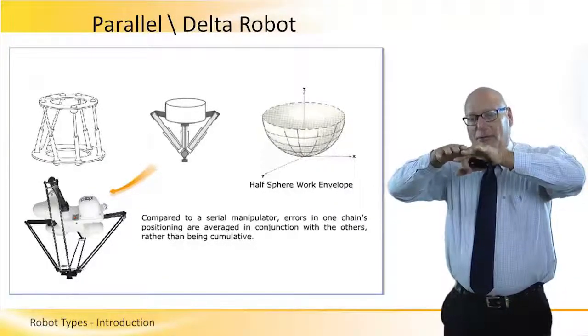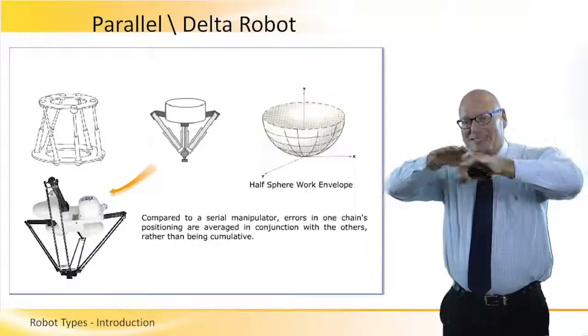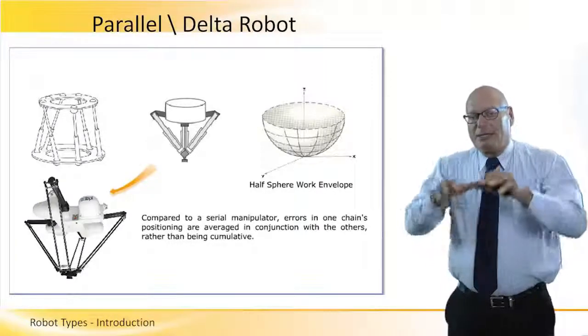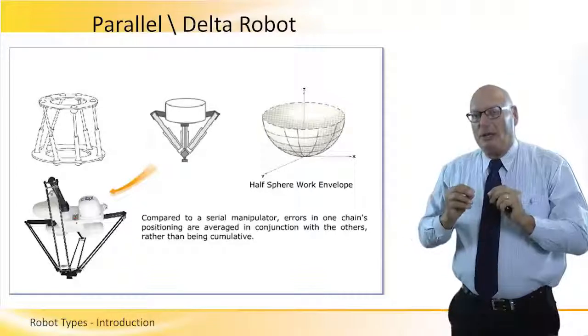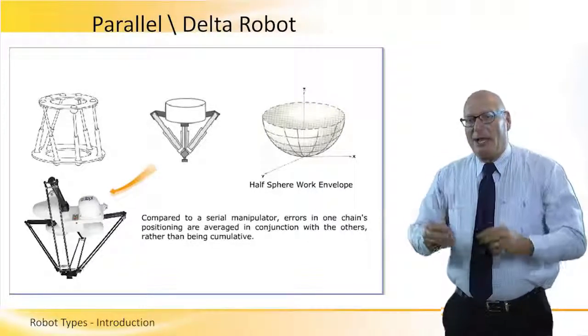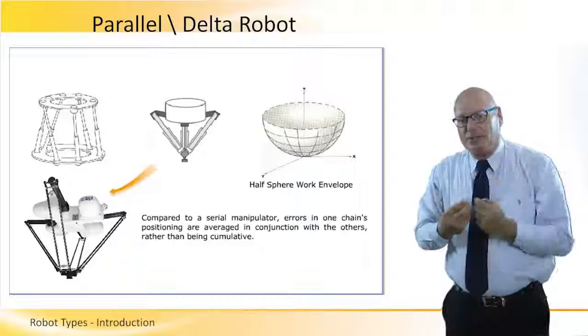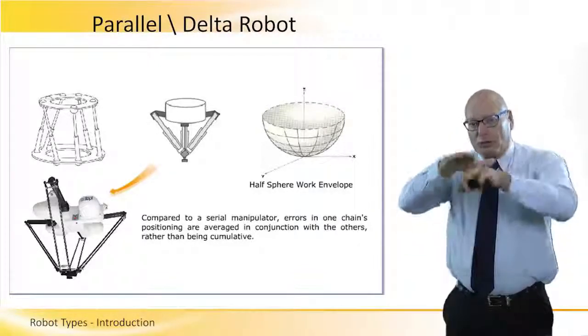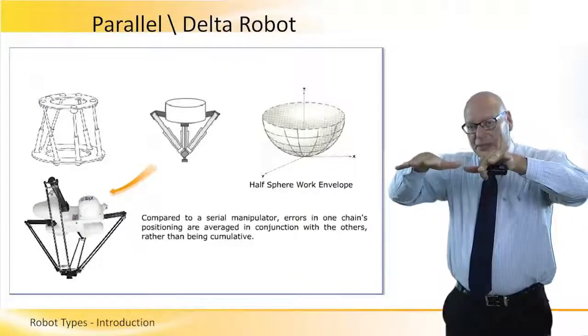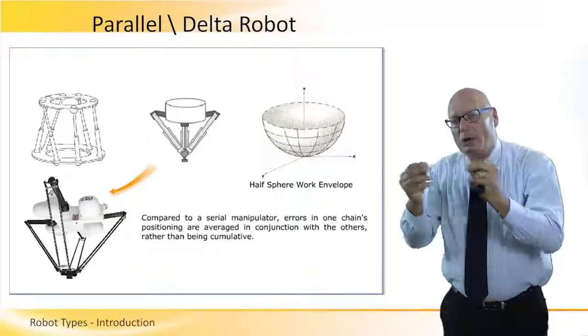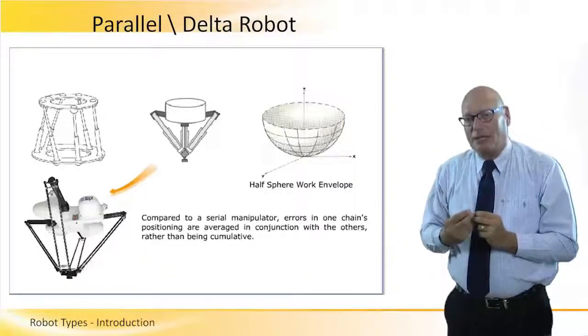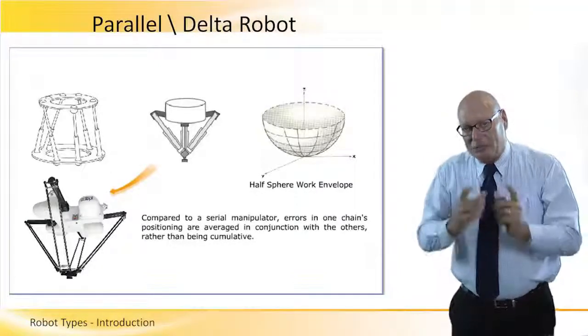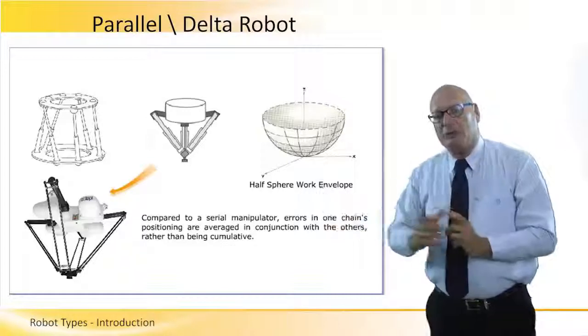So that particular parallel or delta robot has a semi-spherical working envelope. It is very precise operation, having six different, in this particular example, six different wires or pistons to control the position of the top part. So even if there is a problem in one of the six, the other five will average out that particular problem. It is not the case in any other types of the robot.